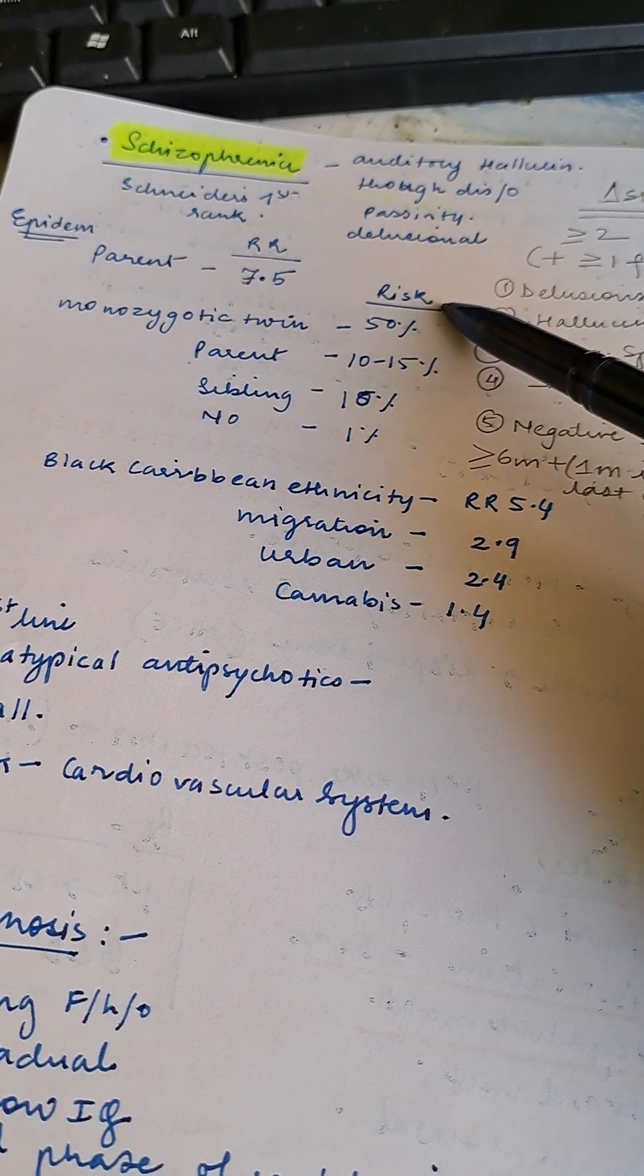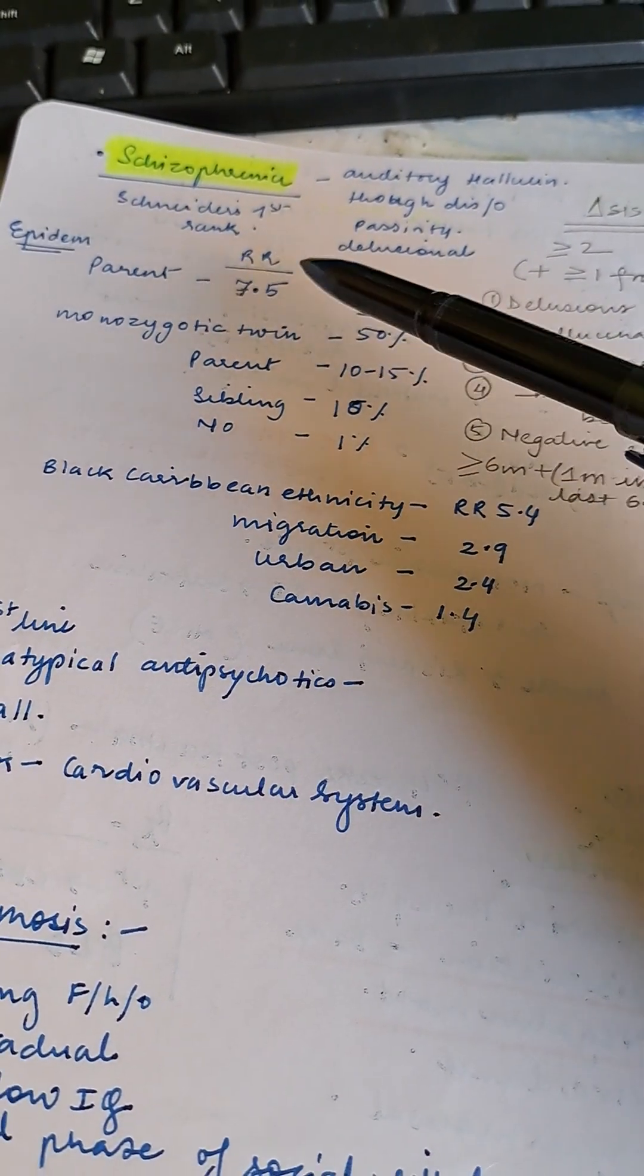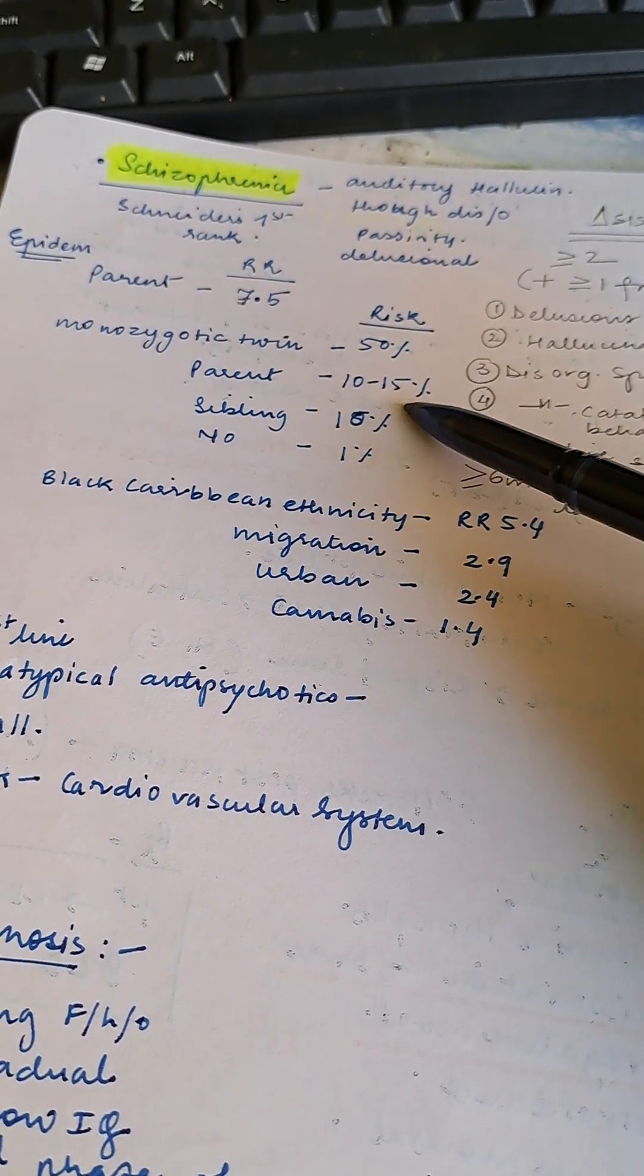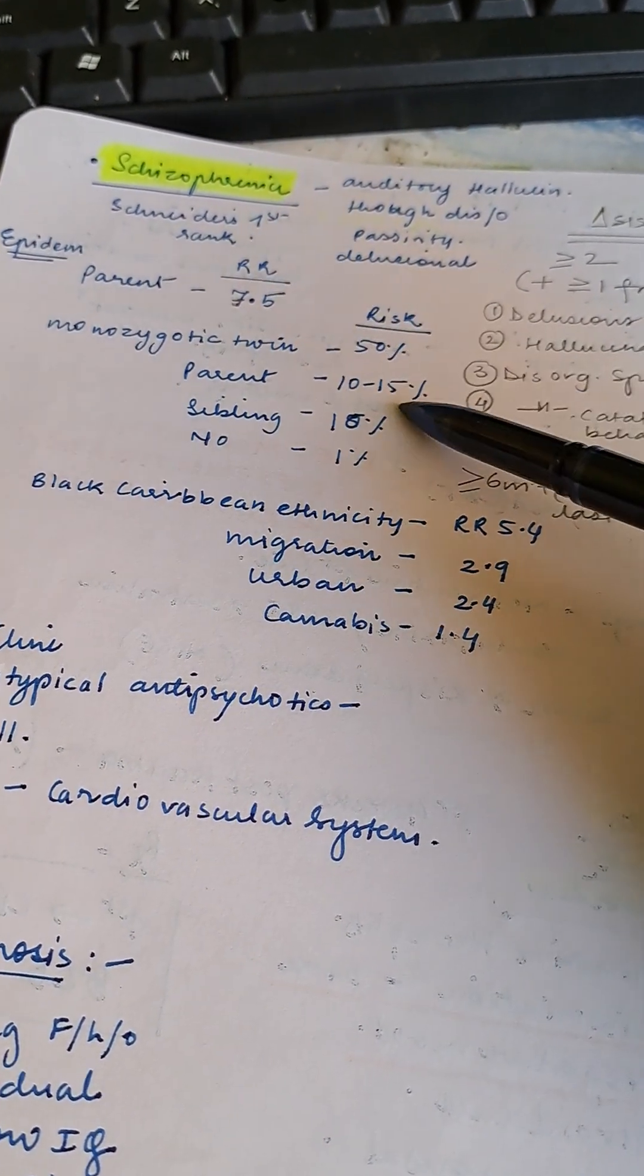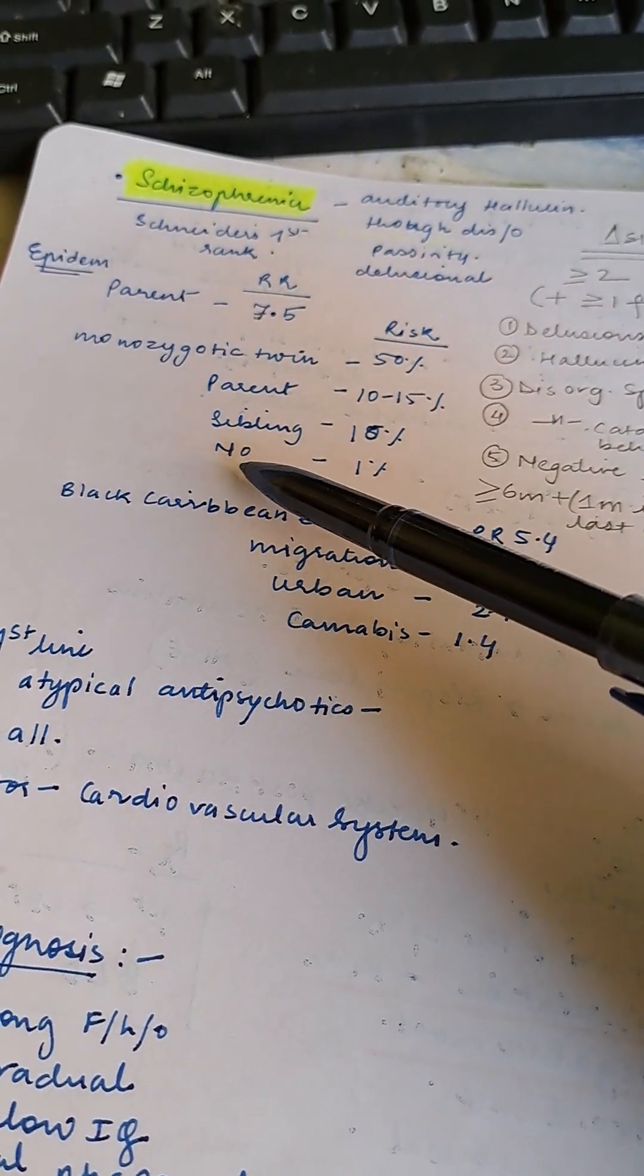Monozygotic twins have 50% risk, not relative risk. Parents affected means 10 to 15% risk, relative risk 7.5. Siblings have 10% risk. No family history means 1% risk.